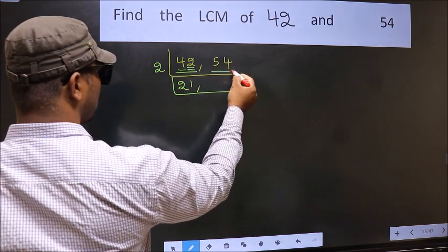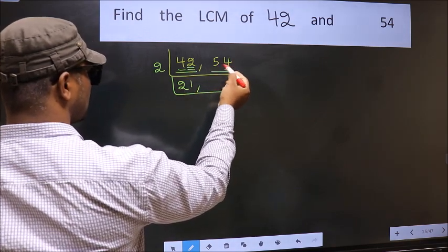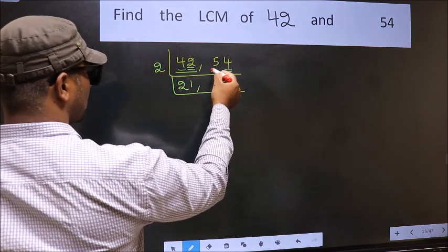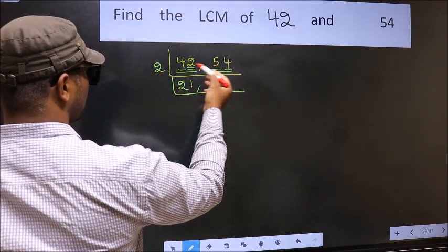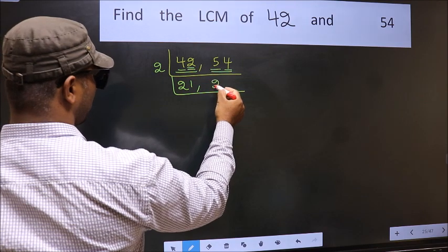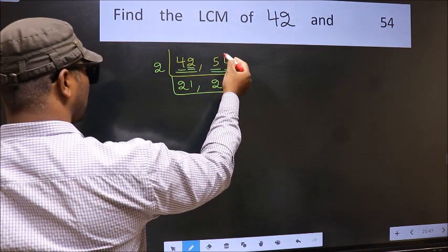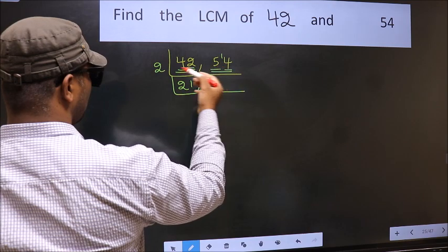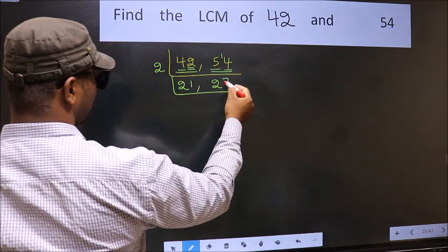Now the other number 54, last digit 4, even, so this is divisible by 2. First number 5, a number close to 5 in 2 table is 2 times 2 is 4. 5 minus 4 is 1, 1 carried forward 14. When do we get 14 in 2 table? 2 times 7 is 14.